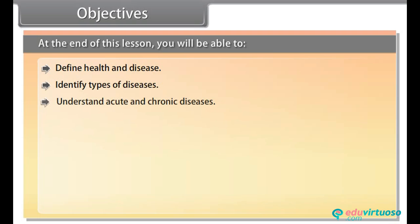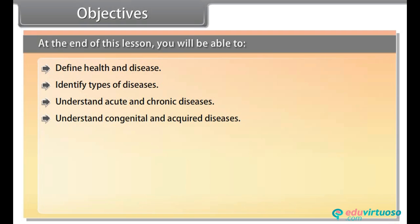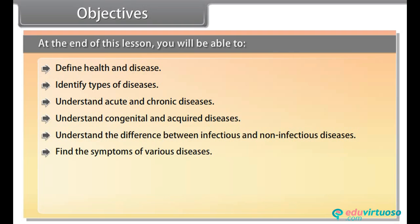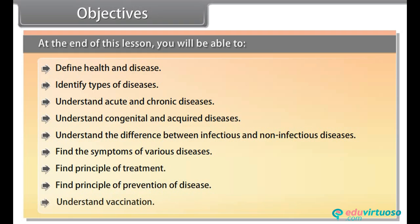At the end of this lesson, you will be able to define health and disease, identify types of diseases, understand acute and chronic diseases, understand congenital and acquired diseases, understand the difference between infectious and non-infectious diseases, find the symptoms of various diseases, find principle of treatment, find principle of prevention of disease, and understand vaccination.